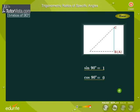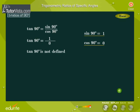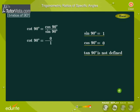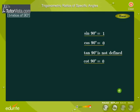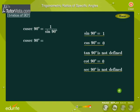Using these ratios, we can calculate the other trigonometric ratios. Tan 90 degrees is equal to sine 90 degrees by cos 90 degrees, which is not defined. Cot 90 degrees is equal to cos 90 degrees by sin 90 degrees, which is equal to zero. Sec 90 degrees is equal to 1 by cos 90 degrees, which is not defined. Cosec 90 degrees is equal to 1 by sin 90 degrees, that is equal to 1.